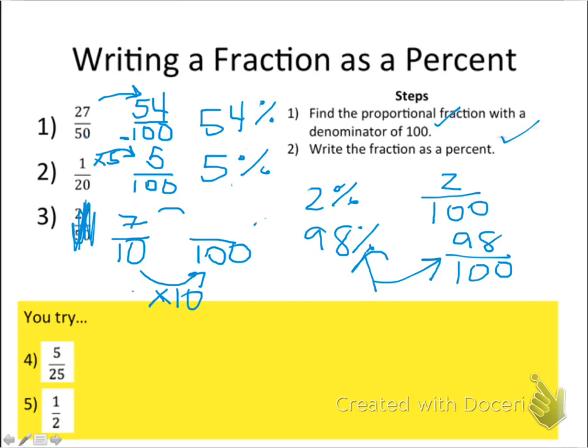Whatever I've done to the denominator, I have to do the same thing to the numerator. So I multiply 7 times 10. It gives me 70. And 70 out of 100, written as a percent, is just 70%.